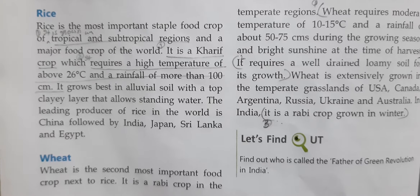Cotton is a fiber crop grown in tropical regions. It requires high temperatures, low rainfall of up to 110 days, frost-free days, and bright sunshine for its growth. Cotton grows best in black and alluvial soils. The major producers of cotton in the world are China, USA, India, Pakistan, Brazil, and Egypt. It provides raw materials for the cotton textile industry.